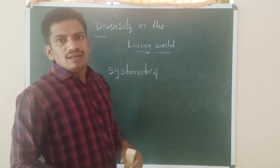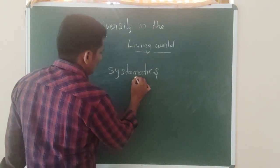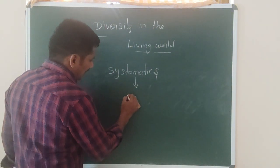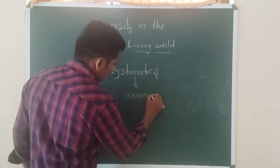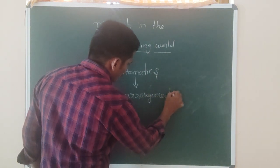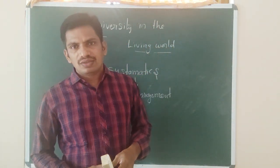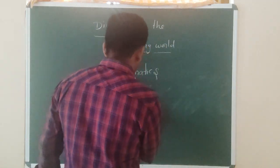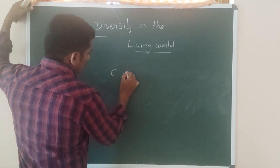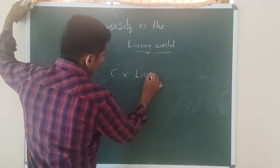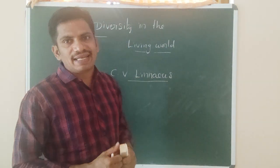Systematics is a word derived from Latin. Systematics means the proper arrangement of organisms in order. Linnaeus — Carolus von Linnaeus — is considered the father of taxonomy.